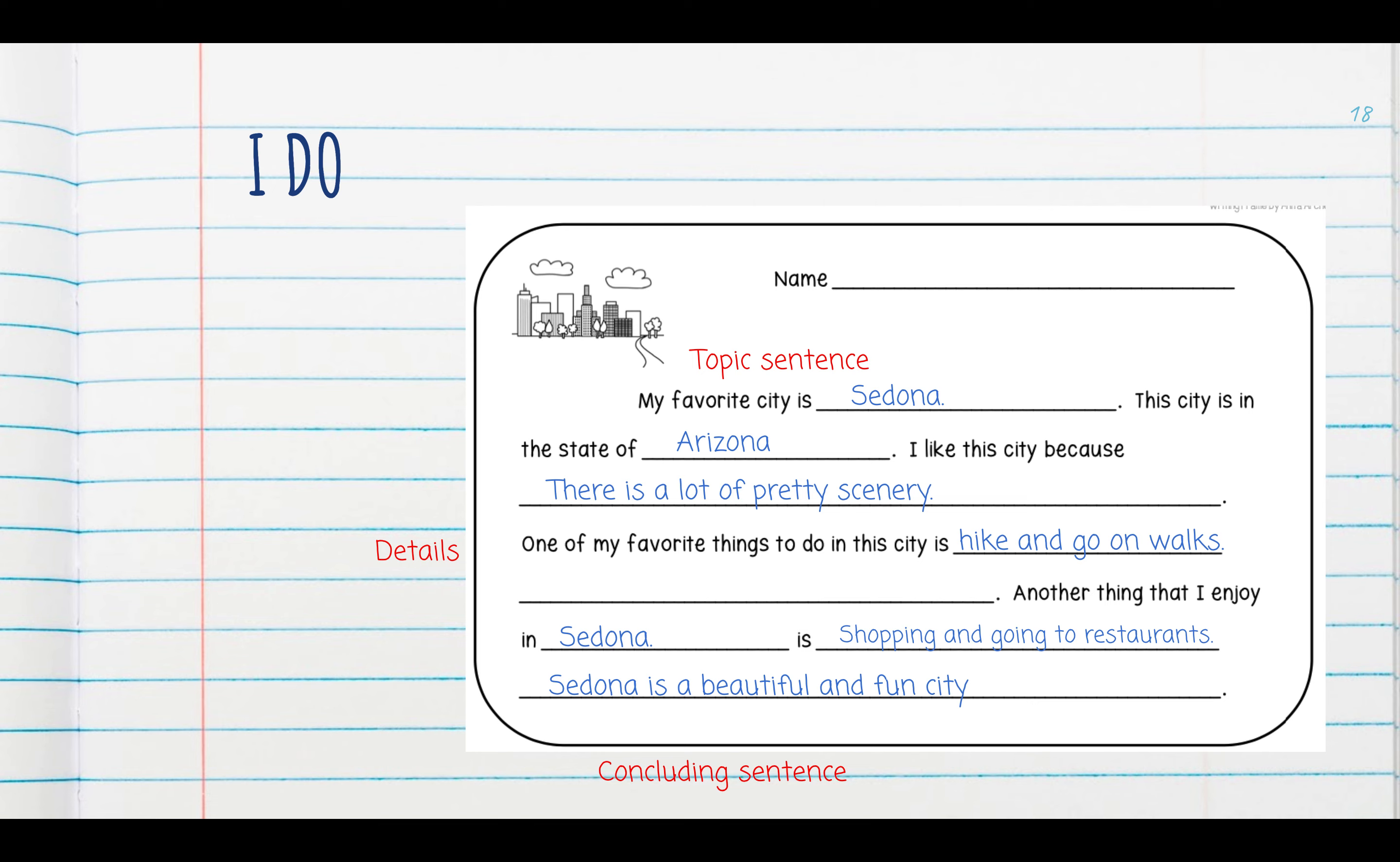The next few sentences are going to be my supporting details, and in this case it's going to be reasons why Sedona is my favorite city. This city is in the state of Arizona. This supports my topic sentence about my favorite city. I like this city because there is a lot of pretty scenery. Here is a reason, but also it supports the main idea that my favorite city is Sedona.